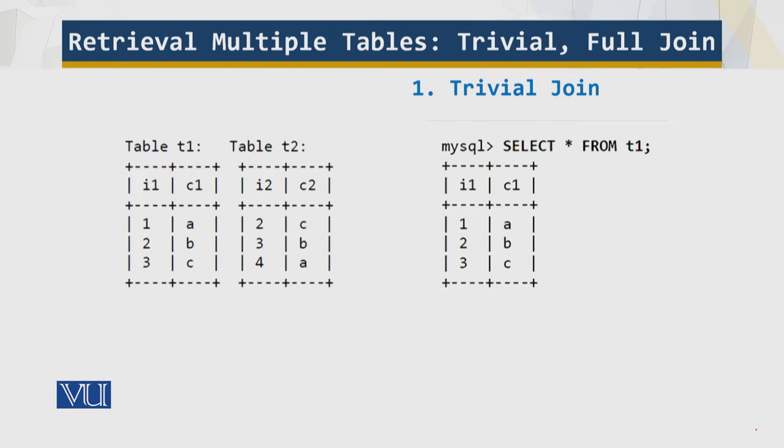The two tables which we have been considering in our modules, table 1, T1 and T2. Now a trivial join is just select asterisk from this table over here. Now some people say that this is not a join at all, but this is a trivial join, it's just a matter of perspective.